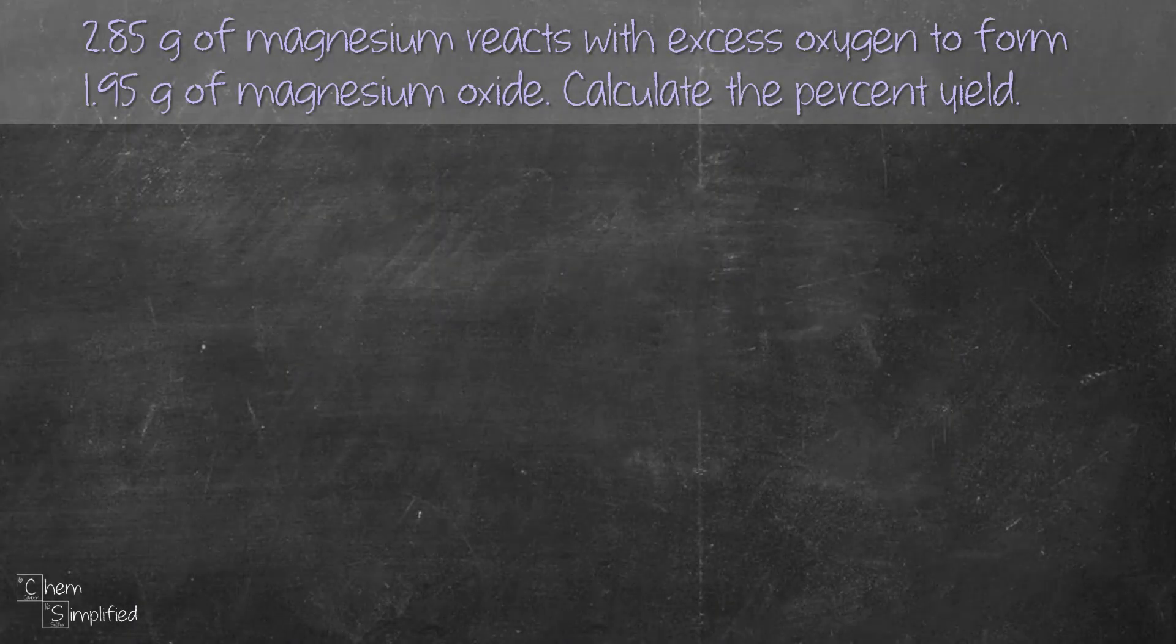Here's the problem: 2.85 grams of magnesium reacts with excess oxygen to form 1.95 grams of magnesium oxide. Calculate the percent yield.